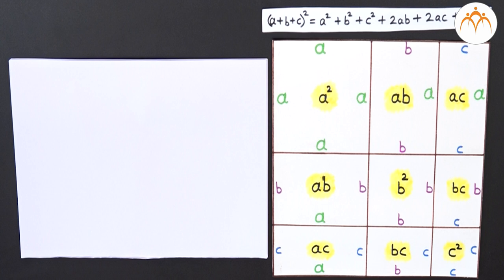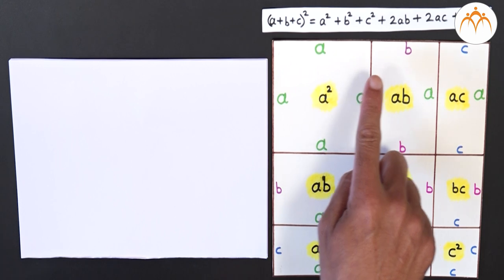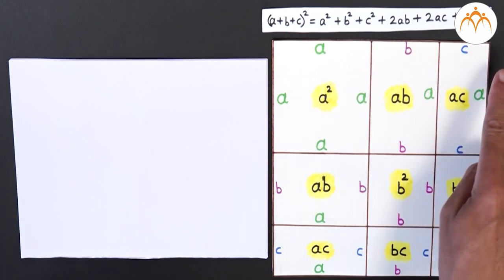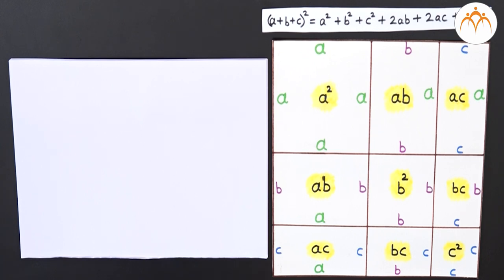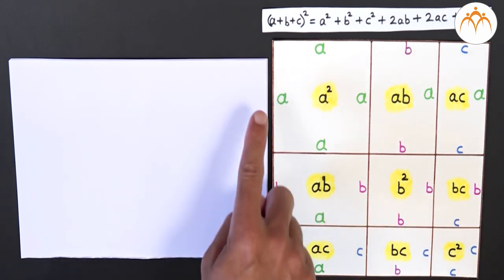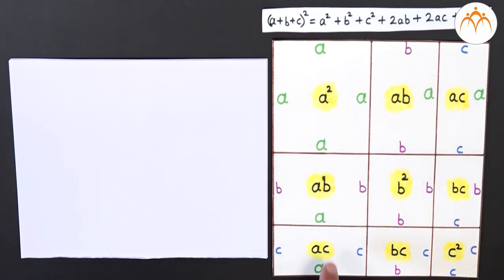As we wish to expand (a+b+c)², it suggests that it is the area of a square with side a+b+c. So let us start with a square whose sides are of length a+b+c — this length is a, the next one is b, and the third is c. The area of the complete figure is equal to the sum of areas of each of these small portions.